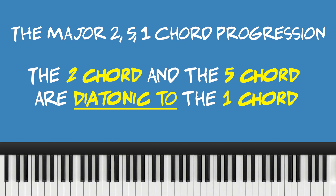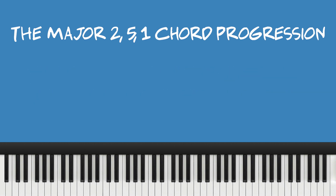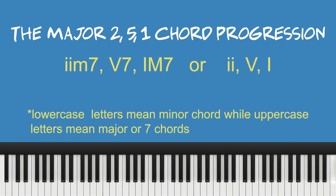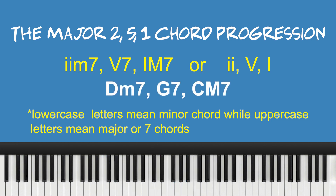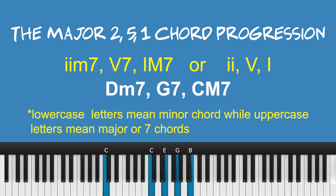Every time a 2-5-1 chord progression is played, the one chord becomes the center of everything that's being played. The most basic major 2-5-1 for gospel music would be to play the two chord and the five chord diatonic to the one chord. We're keeping in mind that the one chord is always a target chord in the progression. For now, let's stick to the major 2-5-1 — a minor seven, dominant seven, and major seven.